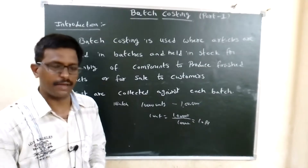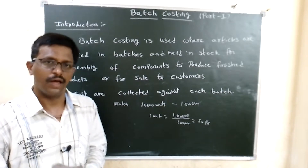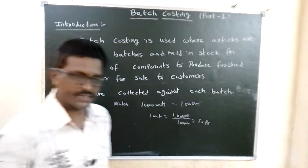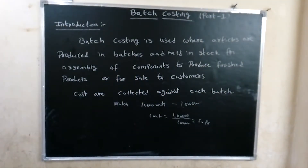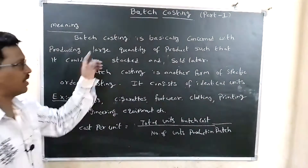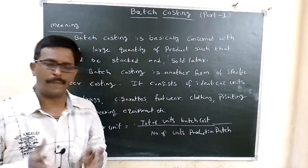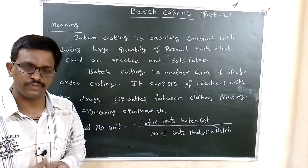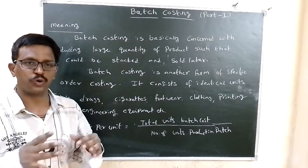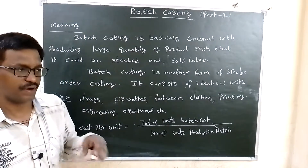Next is the meaning of batch costing. Batch costing is basically concerned with producing large quantities of products. In batch costing, a bulk of products is manufactured in large quantity. Those goods which are manufactured are stock maintained and are demanded, ready for sale.